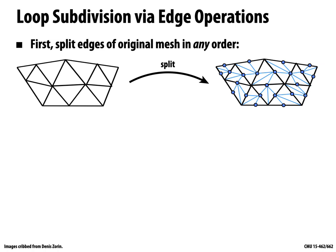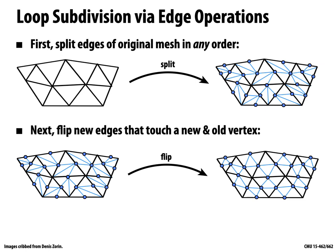We first split all edges of the original mesh in any order, adding new blue vertices and edges. Then we flip any new edges where one endpoint is a new vertex and the other is an original vertex. Doing this produces exactly the connectivity we wanted — every triangle split into four smaller triangles. To complete Loop subdivision, we update vertex positions according to the previously described rules.